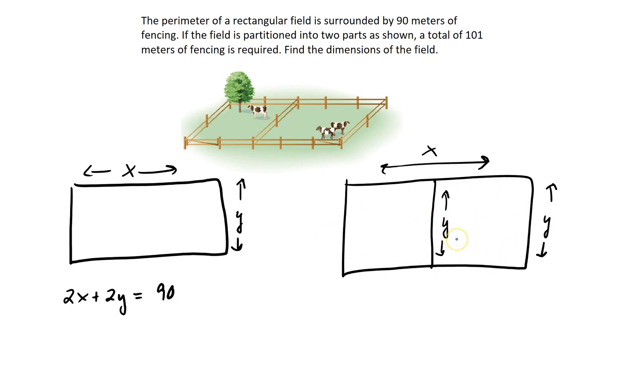Now, if you create the second scenario, you're going to obviously need more fencing because you have that middle strip. So how much are you going to need? You're still going to need 2x plus 2y, but then you're going to need another y in the middle. So you're going to need 2x plus 3y. And the sum of those amounts brings you to 101 feet of fencing.